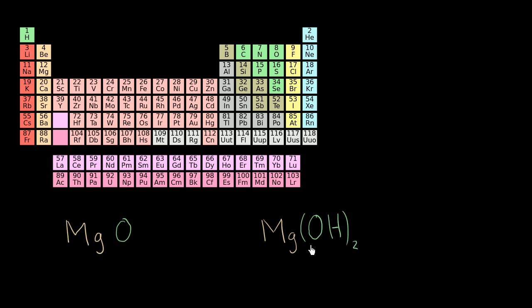So I'm assuming you've given a go at it. Now let's try to work through this together. So first of all, magnesium. Magnesium, right over here, we see it's group two. It's an alkaline earth metal.